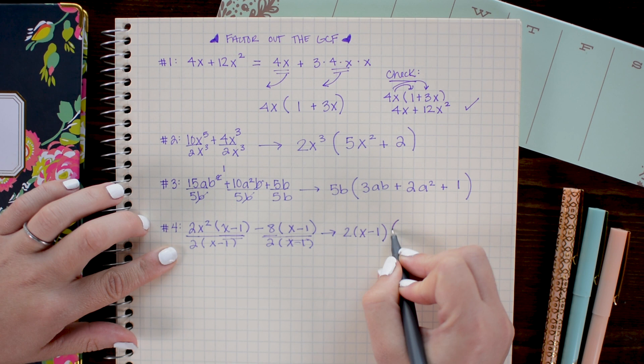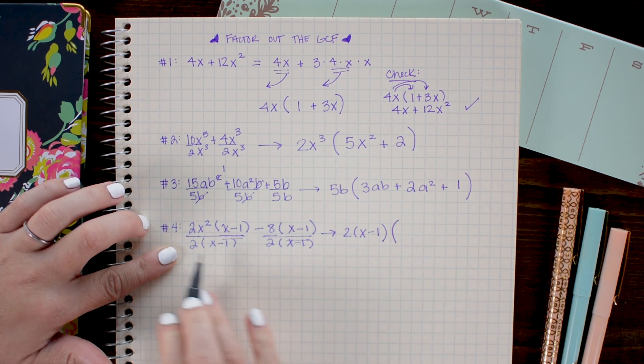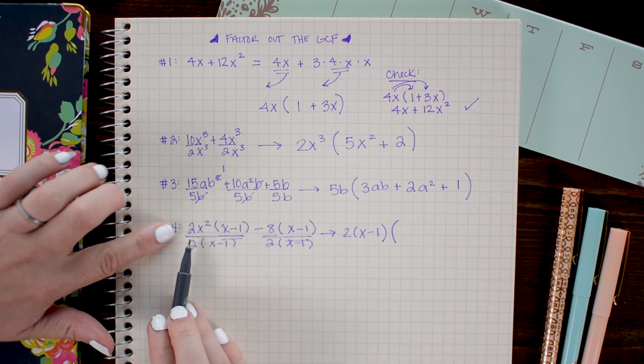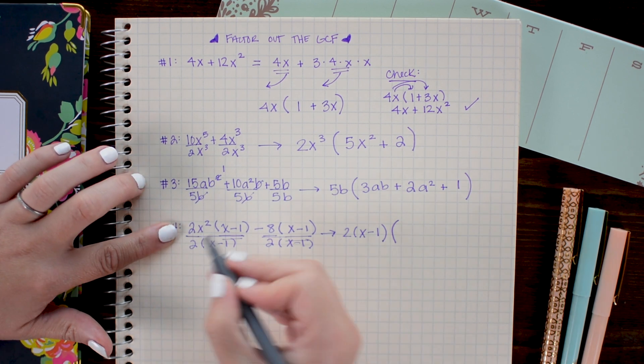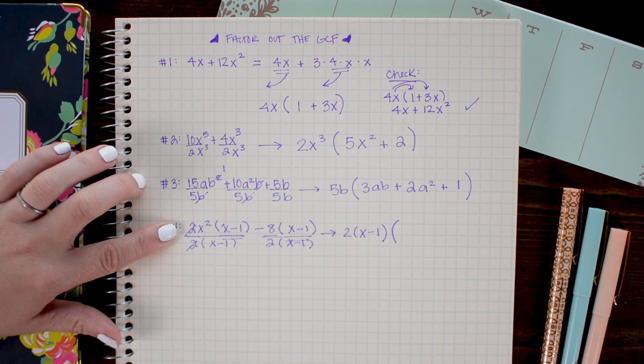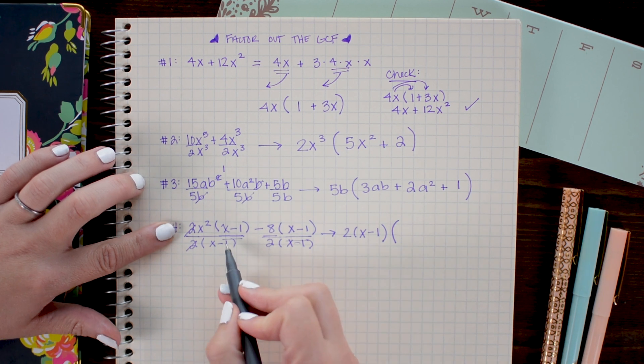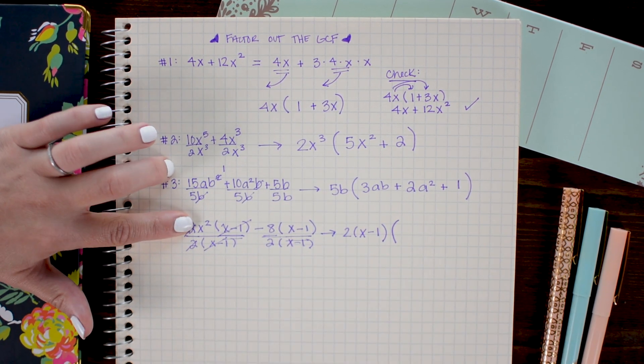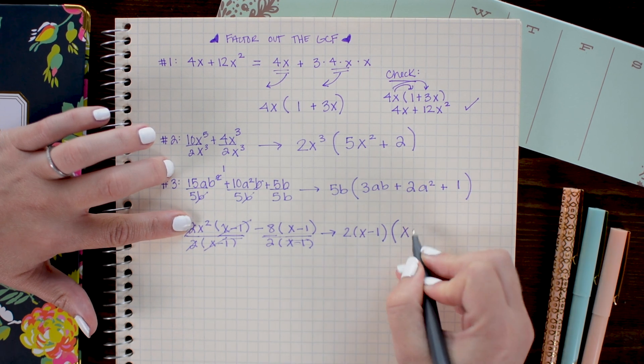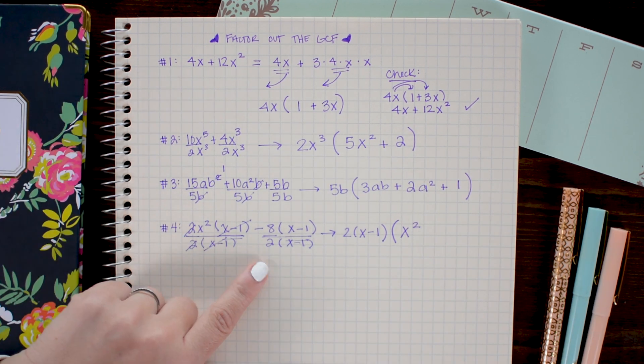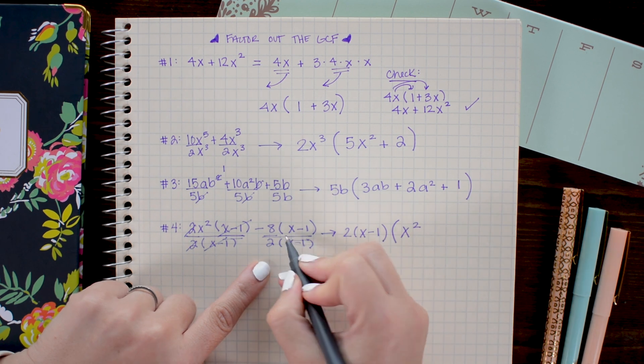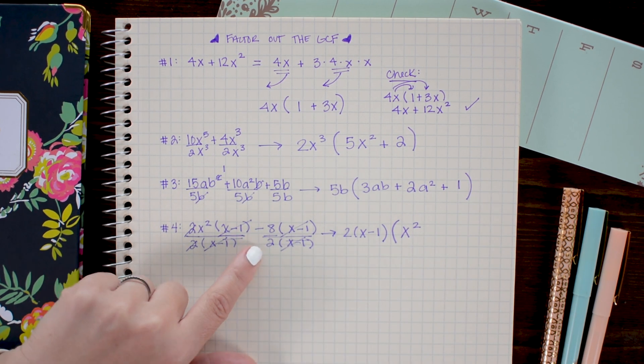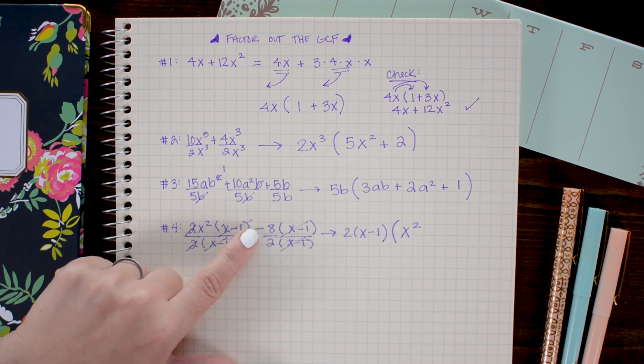And then in a parenthesis I'm going to write the remaining terms that I get after dividing. So in the first term I have 2 divided by 2 which cancels out to 1. The x minus 1's also cancel out and so I'm simply left with x squared. In this second equation the x minus 1's again cancel out and 8 divided by 2 is 4. So I have minus 4.